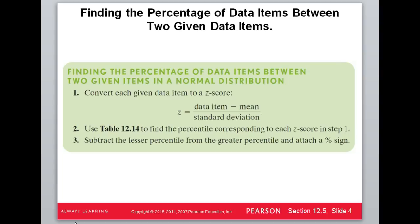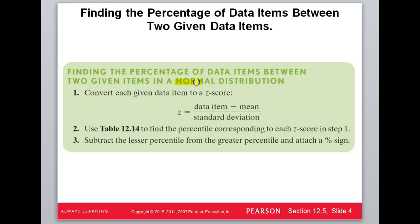Now how are we going to do this? We're finding the percentage of data items between two given data items. This is specifically for normal distribution — that's important to understand. First of all, we're going to find the z-score: data item minus the mean, divided by the standard deviation.